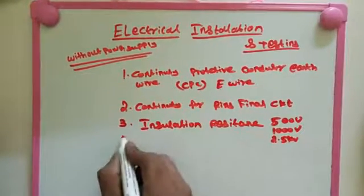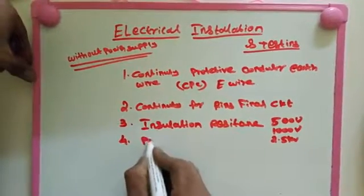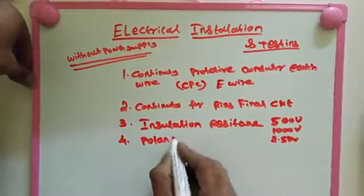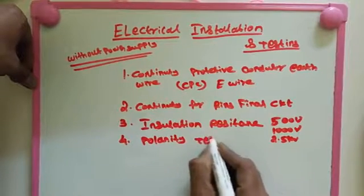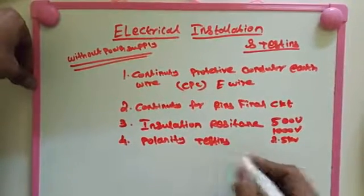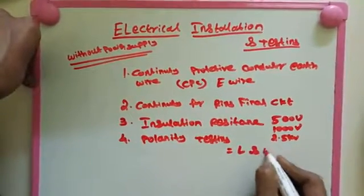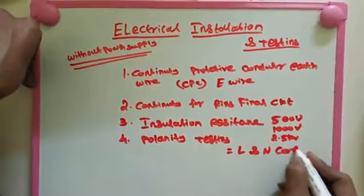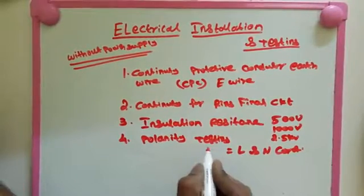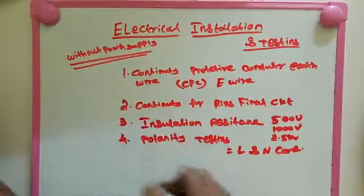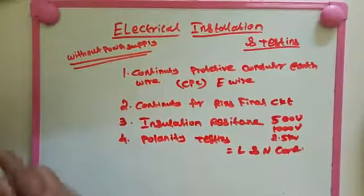And then fourth one is polarity testing. This one is to check if the line and neutral terminal is correctly connected or not. So this is called the polarity testing. These four testings we need to check without power supply for electrical installation.